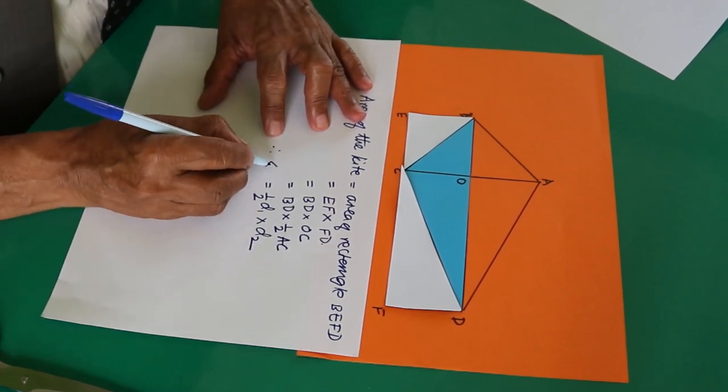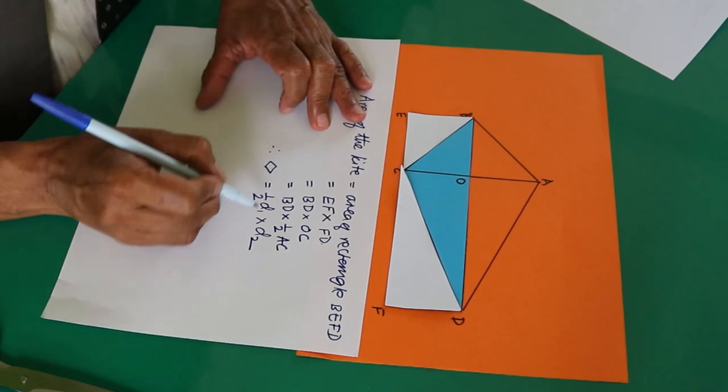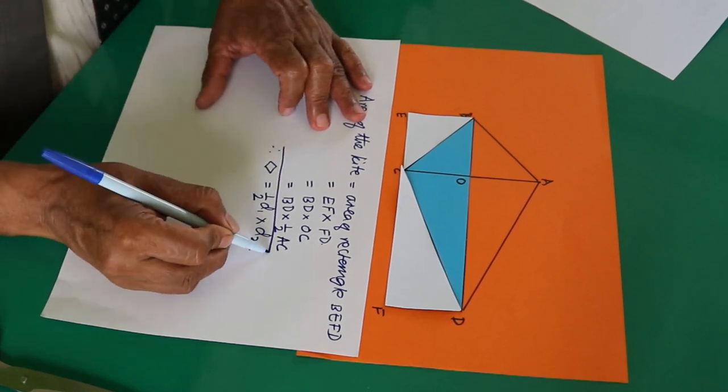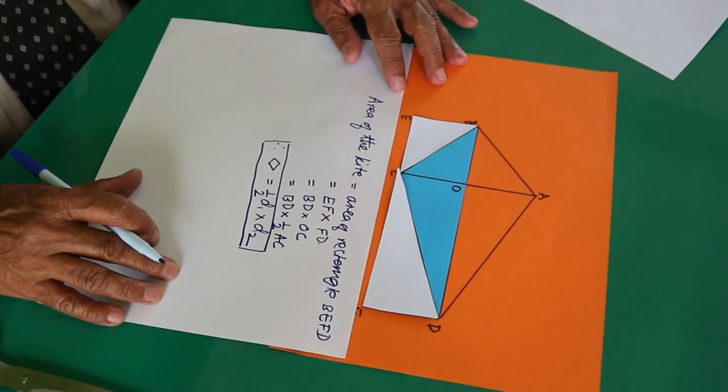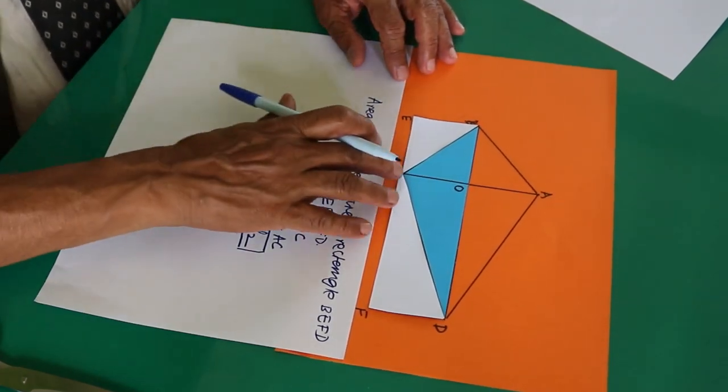Therefore area of the kite is equal to half product of its diagonals. This is the generalization to be made today in this presentation.